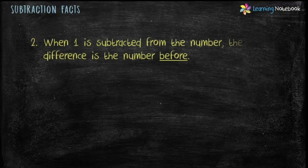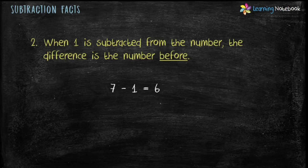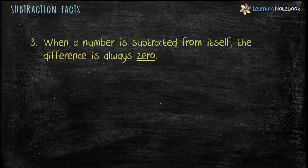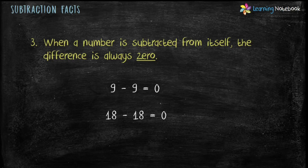The second subtraction fact is: when 1 is subtracted from a number, the difference is the number before. For example, 7 minus 1 equals 6, and 16 minus 1 equals 15. The third subtraction fact is: when a number is subtracted from itself, the difference is always 0.